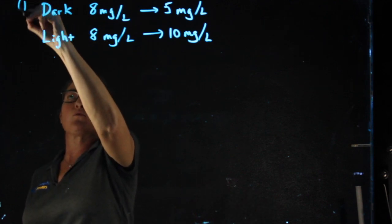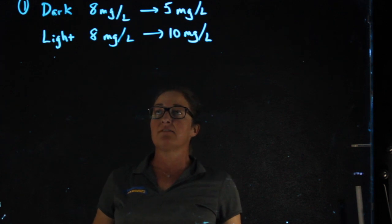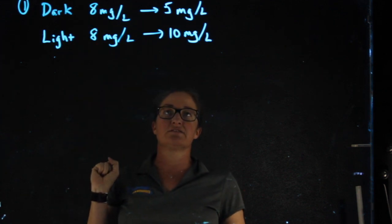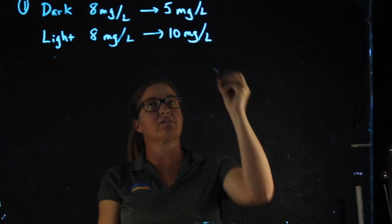This is number one on the sample productivity calculations worksheet. It gives us, we put plants in a bottle, we have our starting oxygen concentrations, and then our oxygen concentrations one hour later.